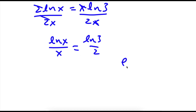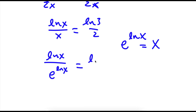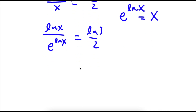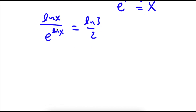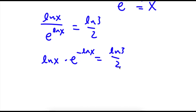Now if I have something in the form e to the power of ln x, this is the same thing as x. So x here I can replace with e to the power of ln x, which gives ln x over e to the power of ln x. This is the same thing as ln x times e to the power of negative ln x, which is equal to ln 3 over 2.